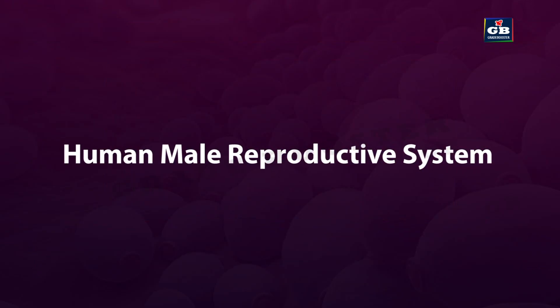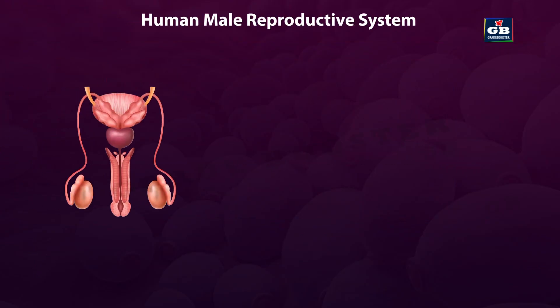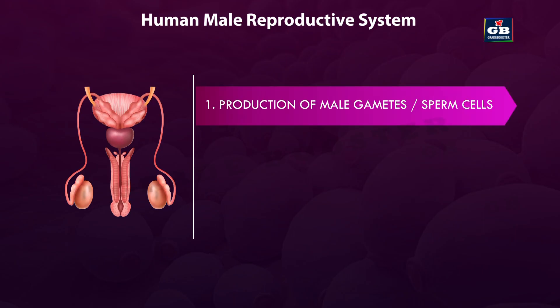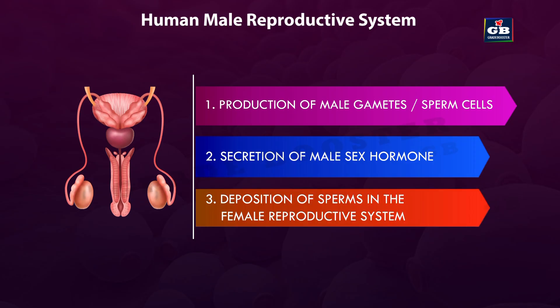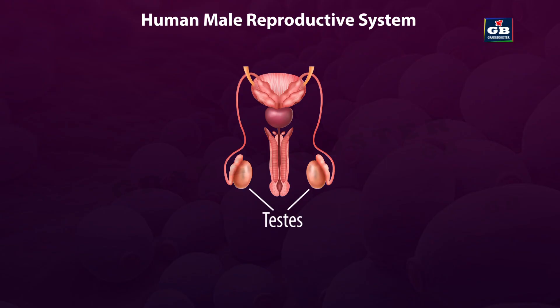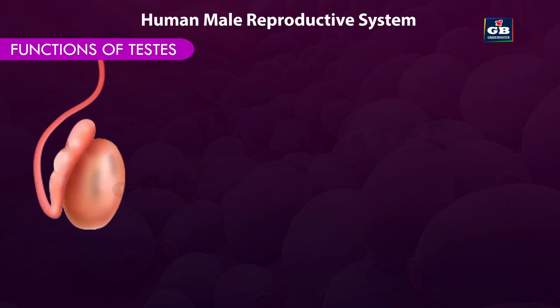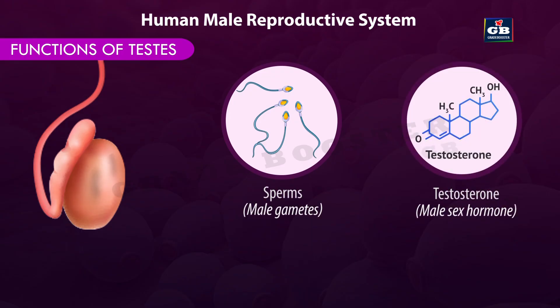Human male reproductive system performs three important functions: 1. Production of male gametes or sperm cells. 2. Secretion of male sex hormone, i.e., testosterone. 3. Deposition of gametes in the female reproductive system. There is a pair of testes present in the male reproductive system. The production of male gametes and secretion of male sex hormone is done by the testes.